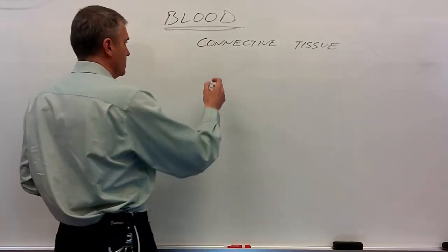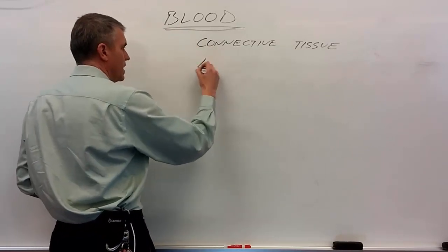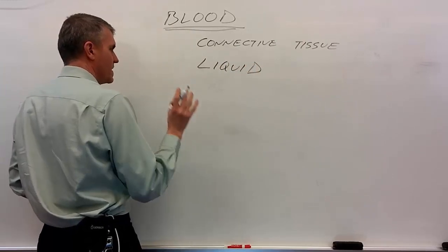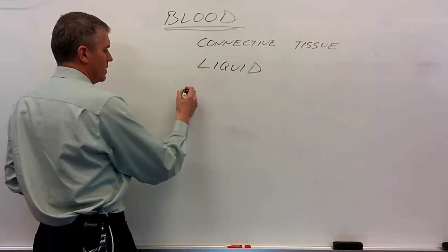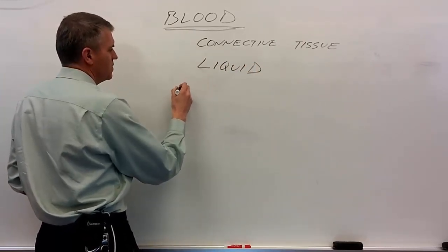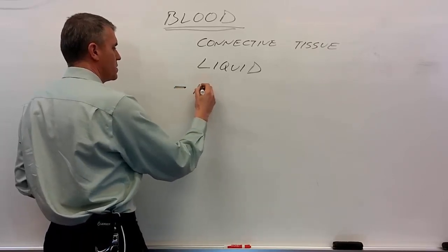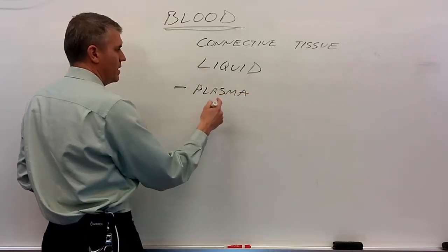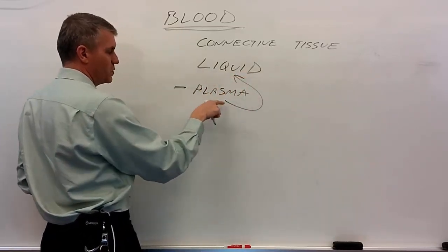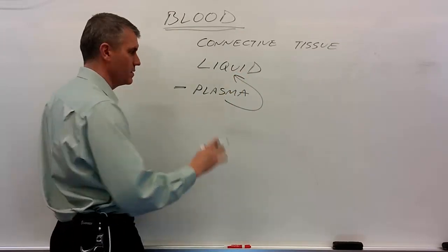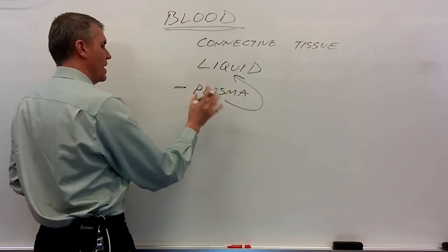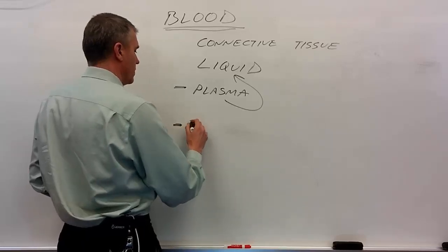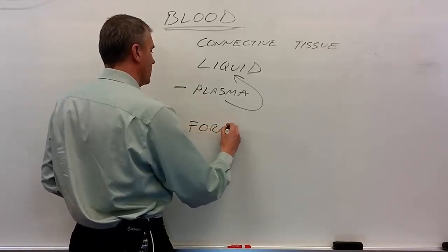So it's a connective tissue, it's a liquid. There are two really broad major components. One is plasma, which is the truly liquid part — that's what the other stuff floats around in. Plasma has a lot of stuff in it and we'll get to that. The other thing that's in blood is what we call the formed elements.